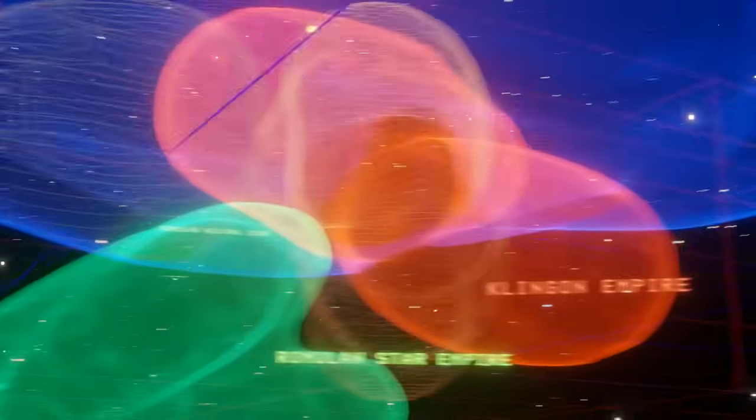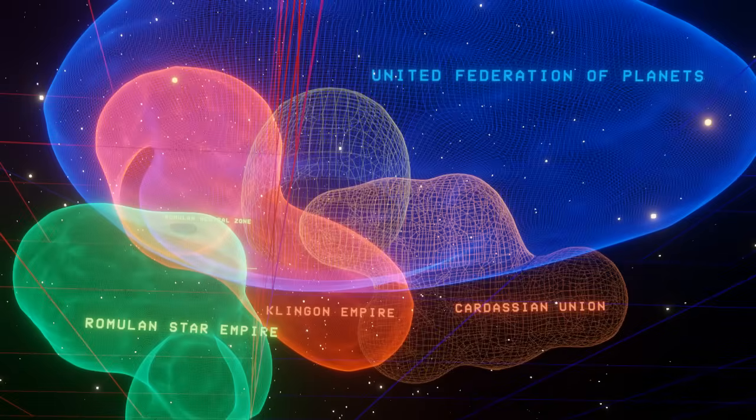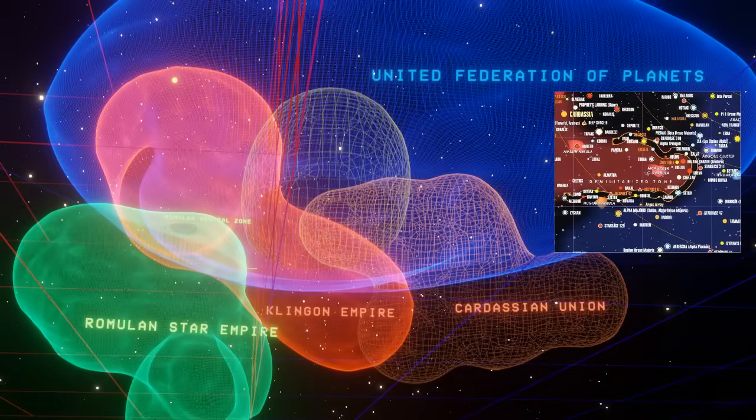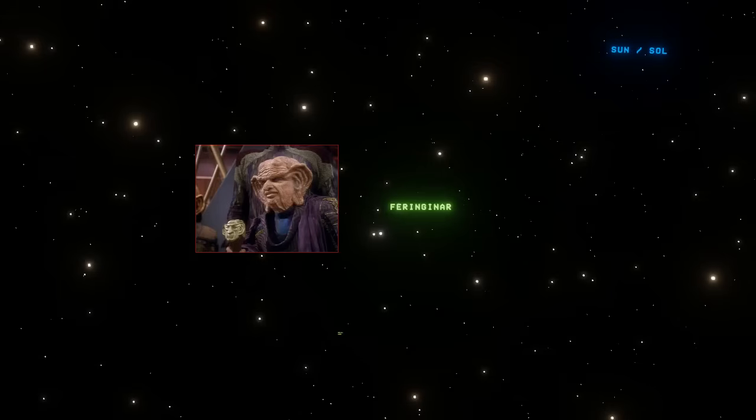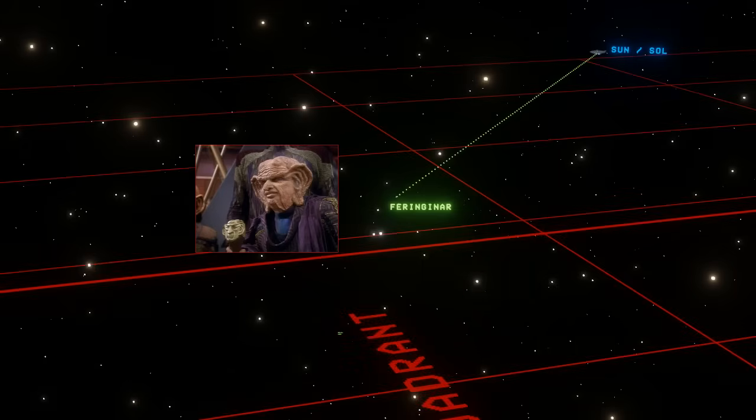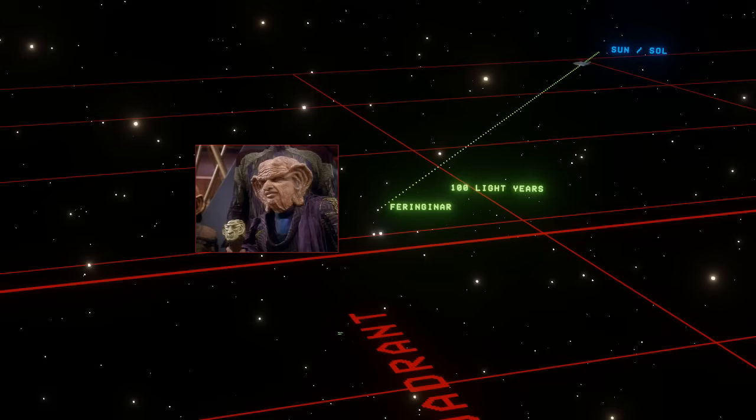The Cardassian Union space bulges towards the Federation space with a Demilitarized Zone encapsulating the downspin reach of the Cardassian territory. Now we look forward of Cardassian space, and here we find Ferenginar, the homeworld of the Ferengi. We do know that Ferenginar is somewhere in this area, and it's about equal distance from Sol as Bajor, somewhere upwards of 100 light-years, meaning it will take about 3 months to reach it at warp 6.